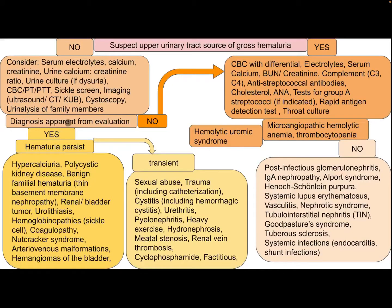If diagnosis is apparent from evaluation, both persistent and transient gross hematuria are considered. Persistent hematuria differential includes hypercalciuria, polycystic kidney disease, benign familial hematuria, thin basement membrane nephropathy, renal or bladder tumor, urolithiasis, hemoglobinopathy, sickle cell, coagulopathy, nutcracker syndrome, arteriovenous malformation, and hemangioma of the bladder. Transient hematuria differential includes sexual abuse, trauma, catheterization, cystitis including hemorrhagic cystitis, urethritis, pyelonephritis, heavy exercise, hydronephrosis, meatal stenosis, renal vein thrombosis, cyclophosphamide, and fictitious.